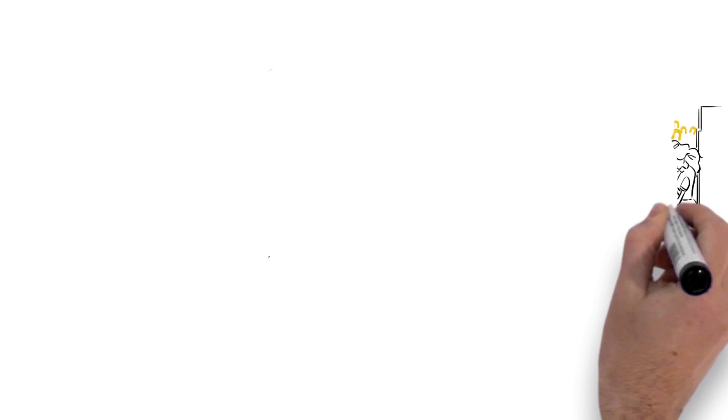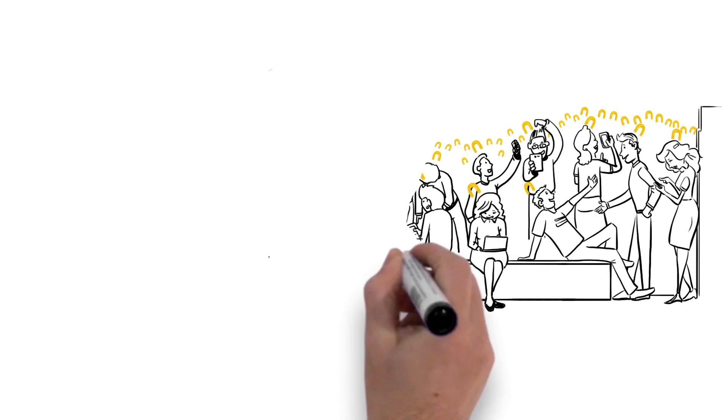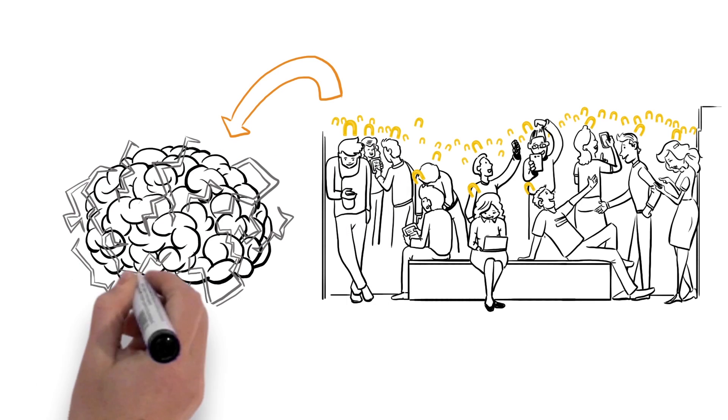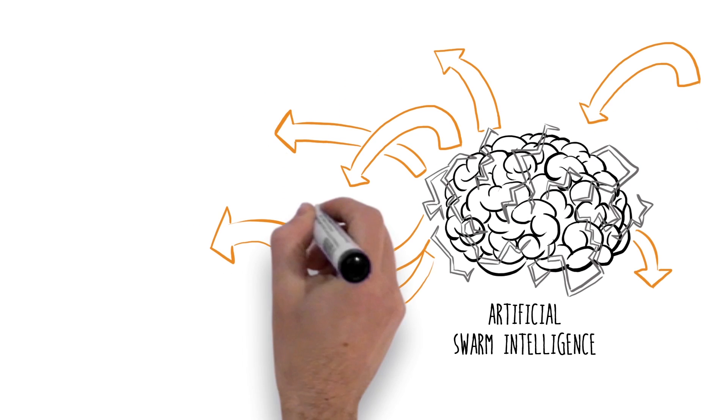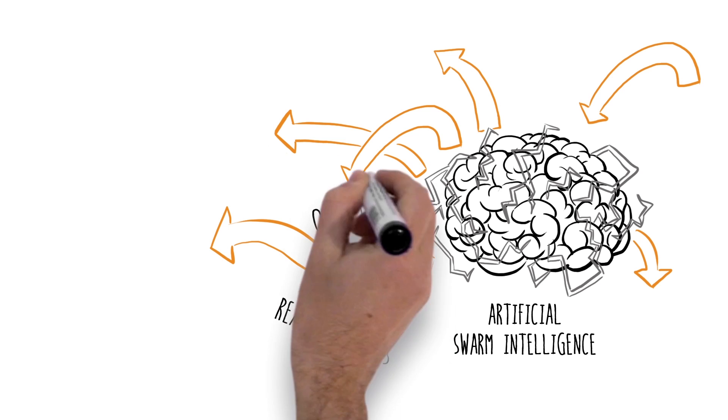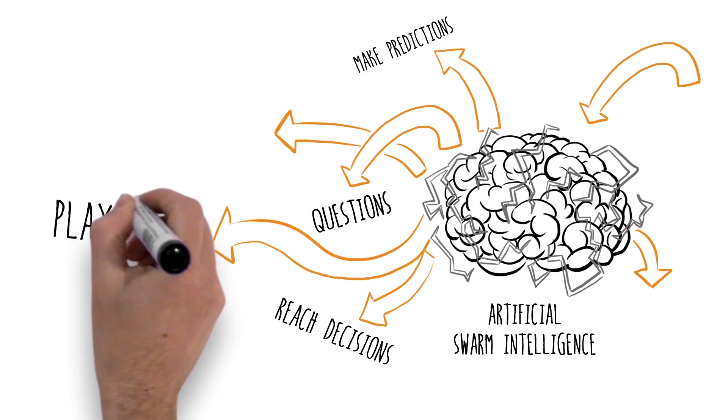Researchers at Unanimous AI have developed technology to allow any online group to form an artificial swarm intelligence, and ask it questions, reach decisions, make predictions, play games.